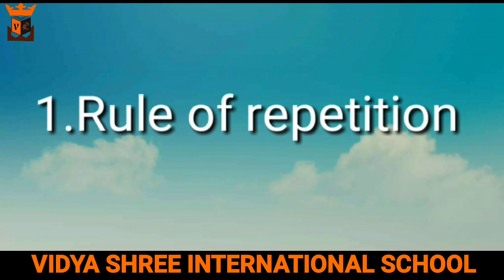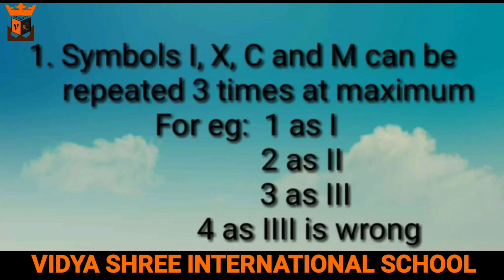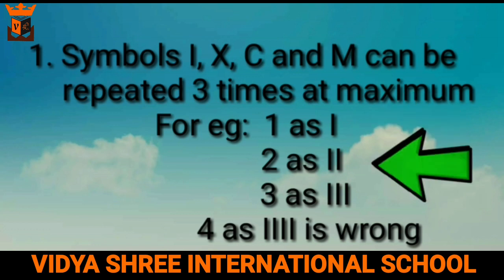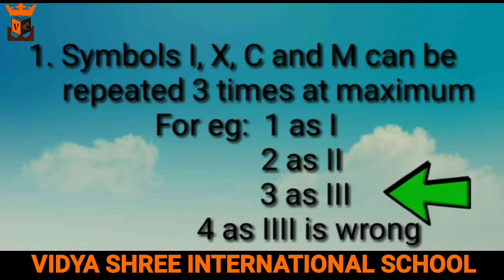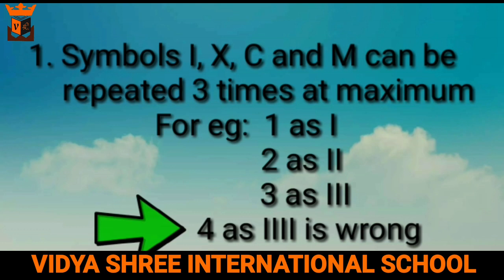Rule one: rule of repetition. The first point to remember is that the symbols I, X, C, and M can be repeated a maximum of 3 times. For example, 1 we can write as I, 2 as II, 3 as III. But we cannot write 4 as IIII, as we can repeat the symbols only 3 times.